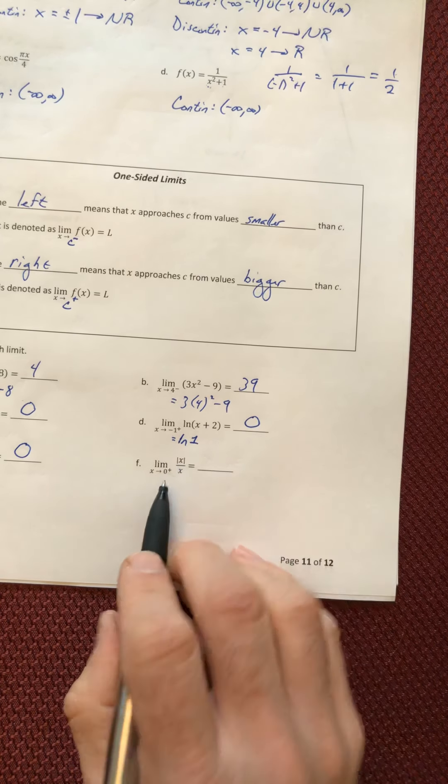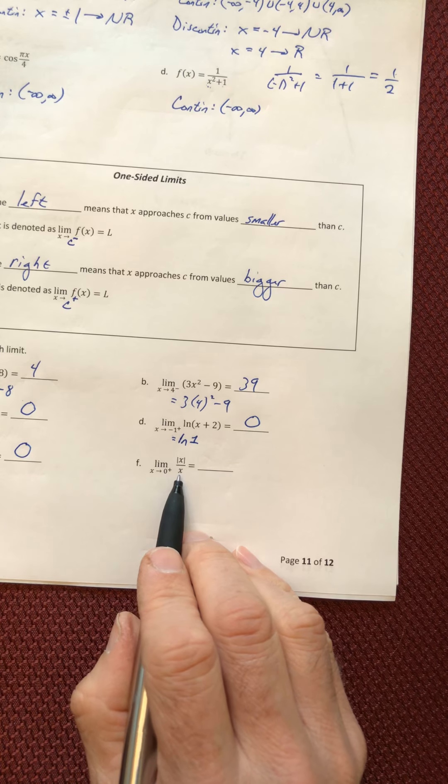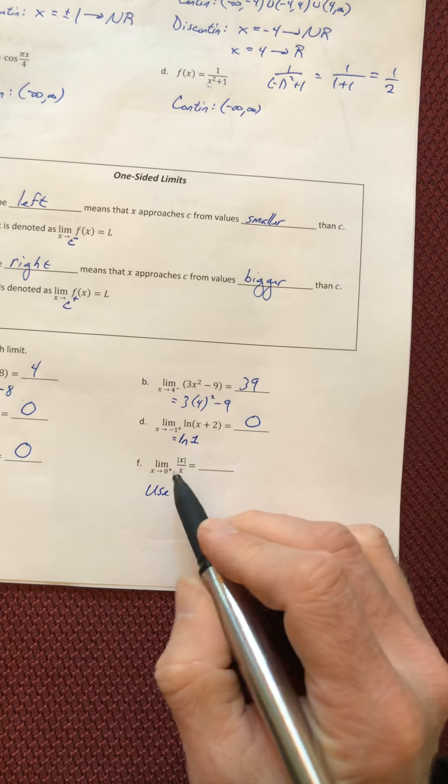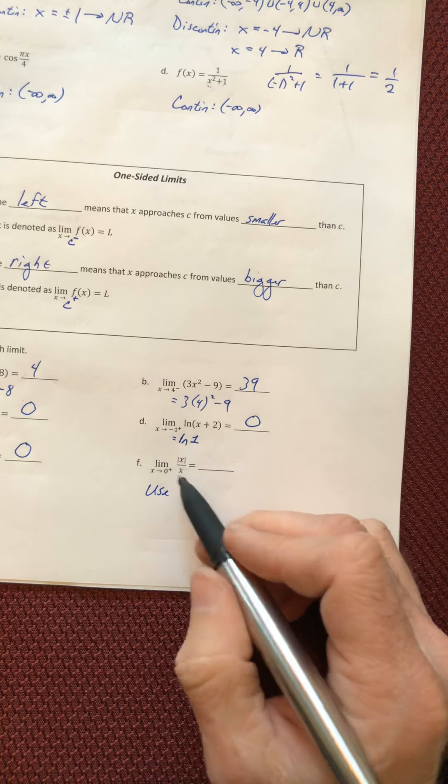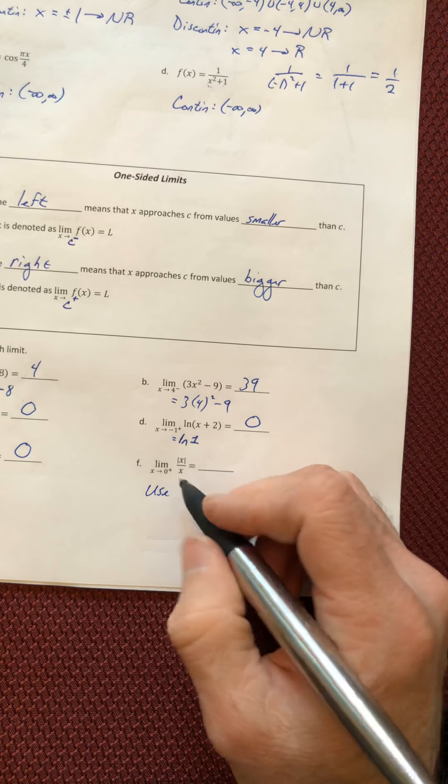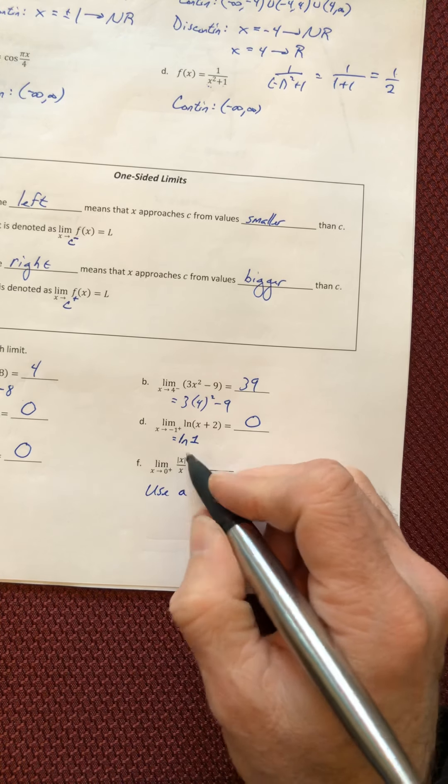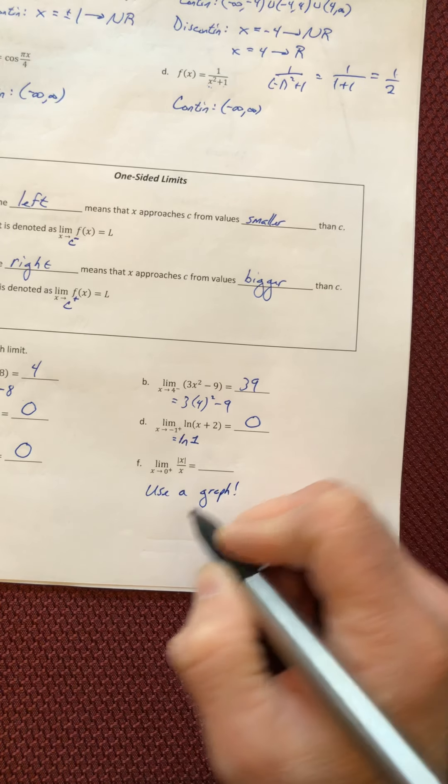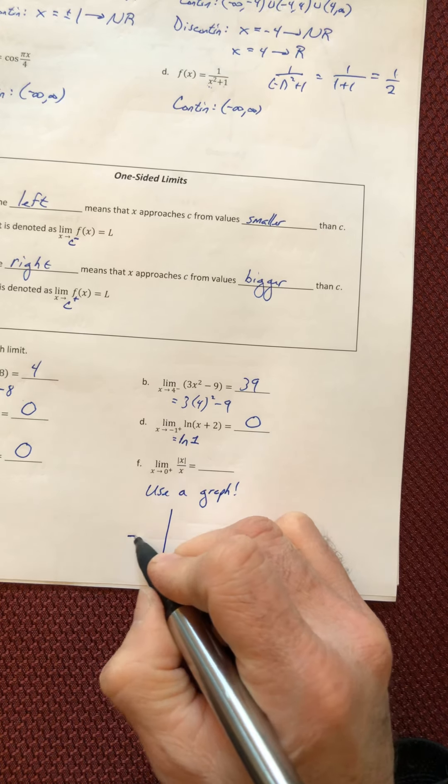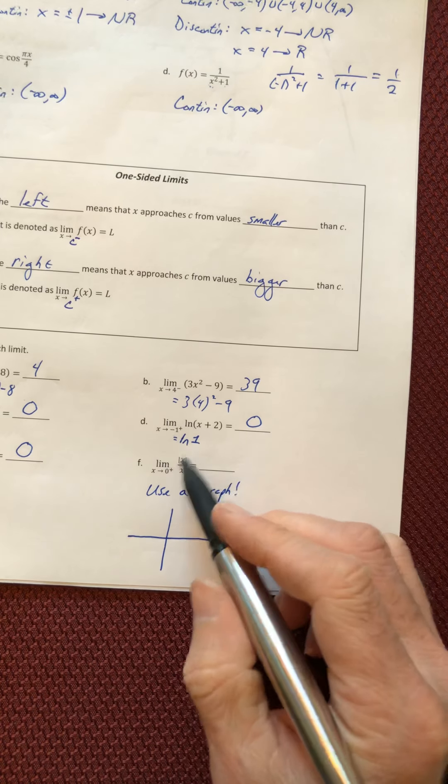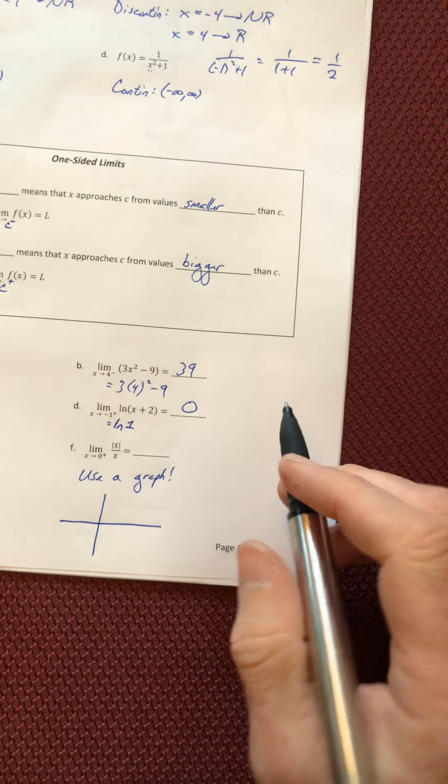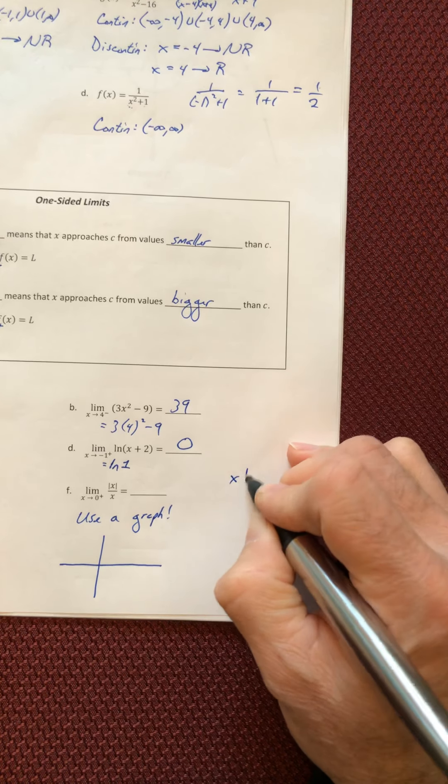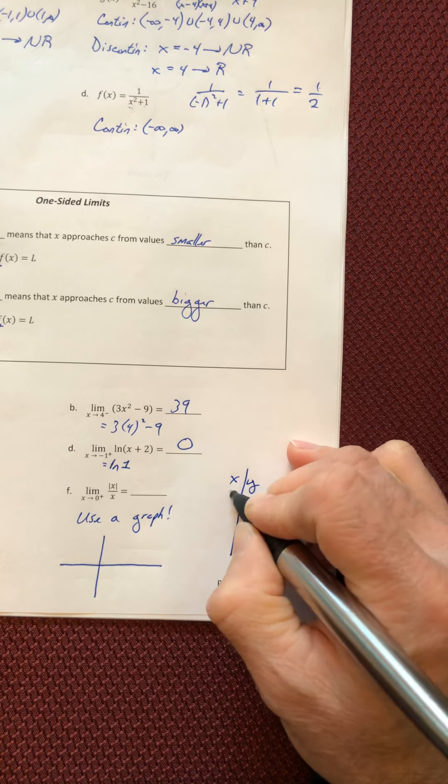Okay, now F. Plug in the zero. Oh, shoot. Now you can't. So you can't plug in the zero there and there's nothing you can do to factor or get things to simplify it. So if you can't manipulate it, use a graph. And some of you have never seen that function before, which is fine. So if you're going, what the heck do I do with that? You don't know what it looks like, then your only recourse of action is to start plotting points.